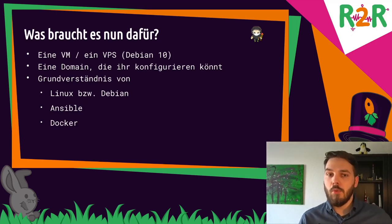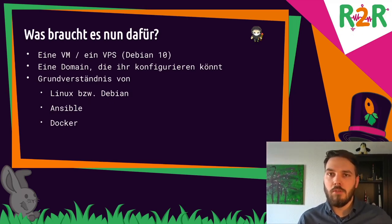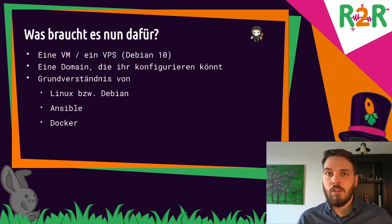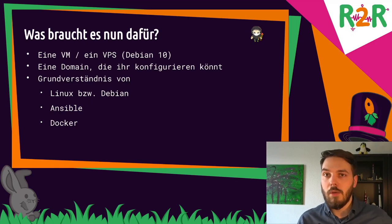What do you need for my solution? You need a VM or VPS — a virtual private server — using a Debian 10 host. This is what I felt most comfortable with. Furthermore, you need a domain which you can use and set up subdomains. This domain is used so other people can reach your WorkAdventure instance. And you might need a little basic knowledge of Linux, Debian, and Ansible.